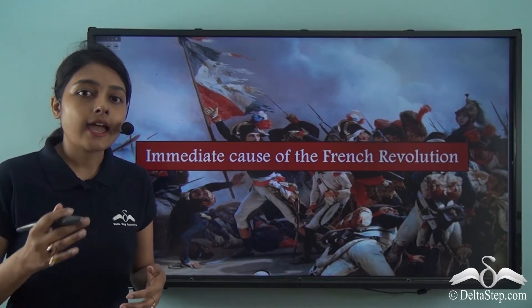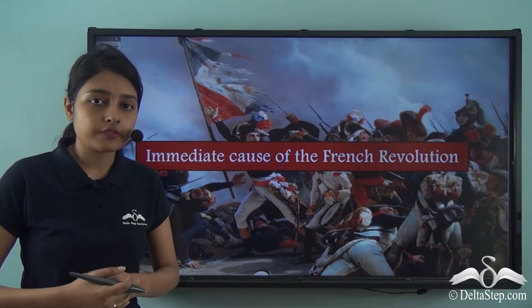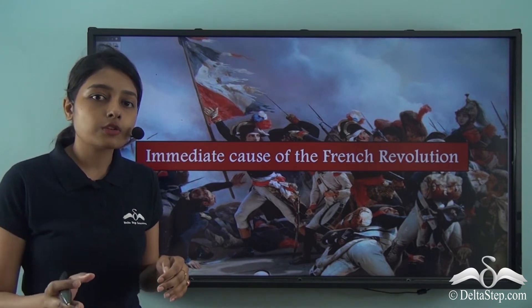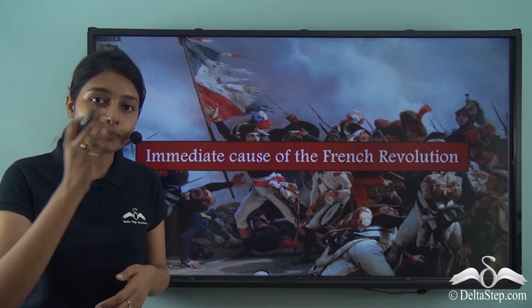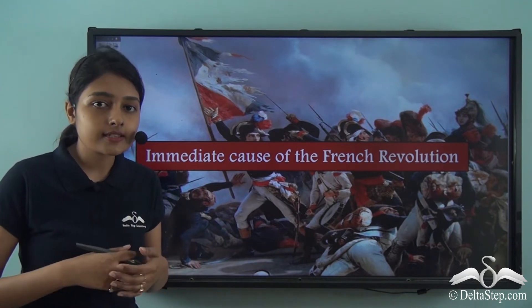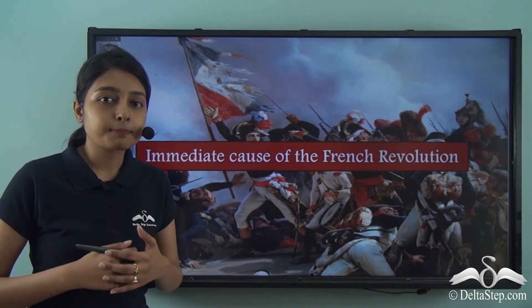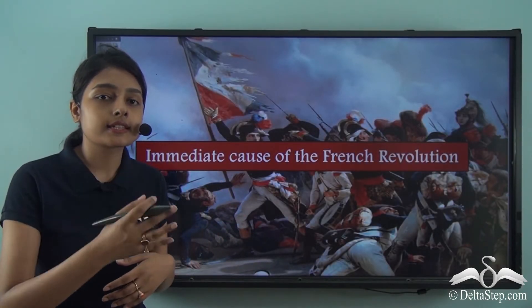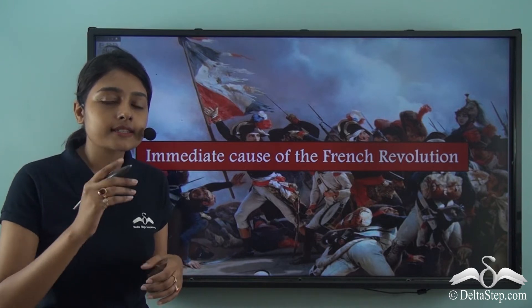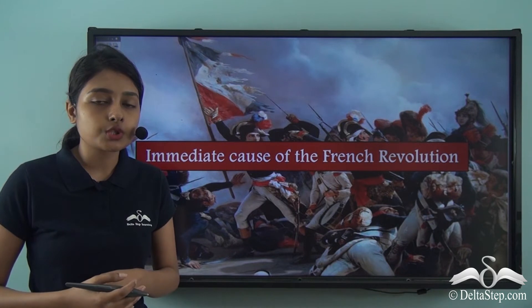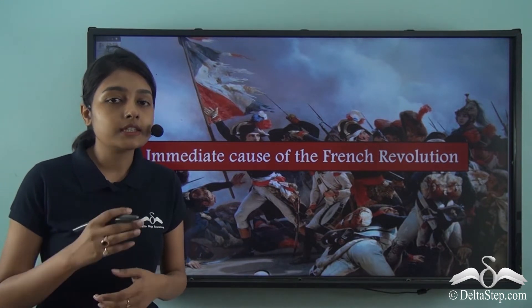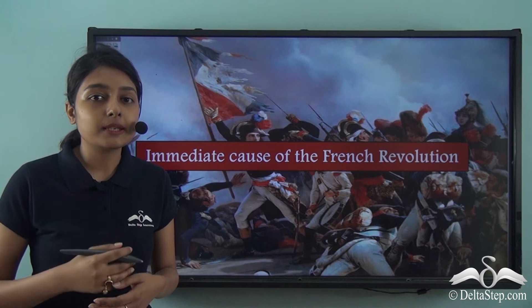The last couple of lessons had us tracing the background of the French Revolution. We discussed at great length what the three estates were, and also talked about the social landscape prevalent prior to the French Revolution. We talked about the French economy and how lots of taxes were imposed on the third estate, causing it to rise in rebellion against French monarchical rule. Now, let us discuss the immediate cause of the French Revolution in this lesson.